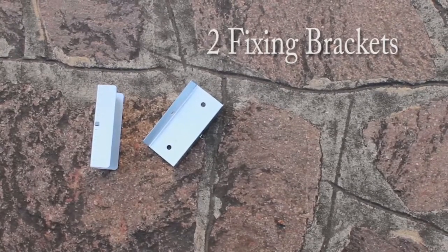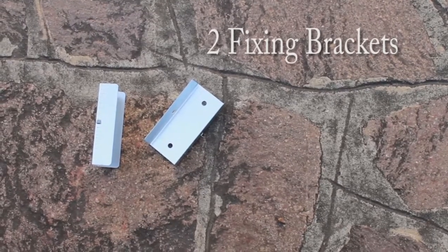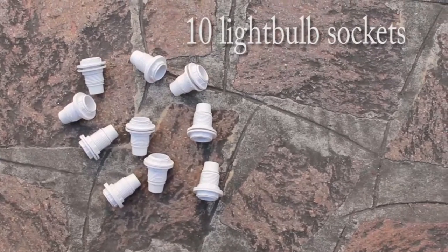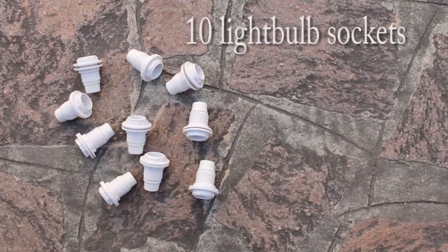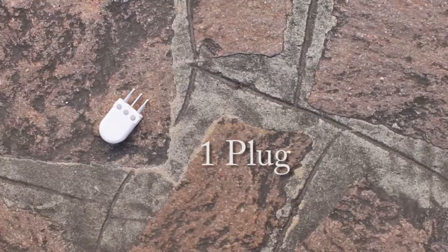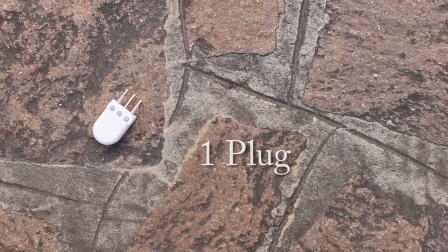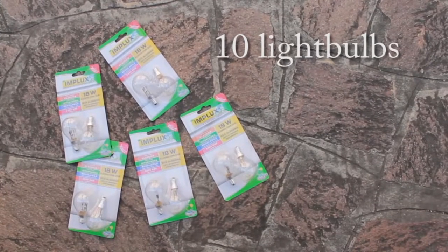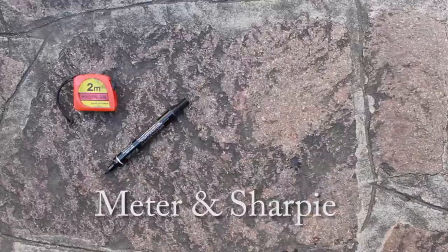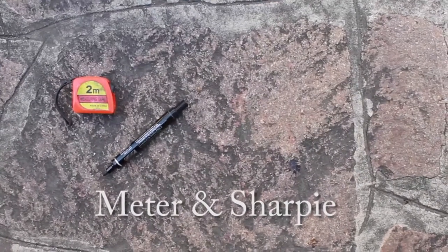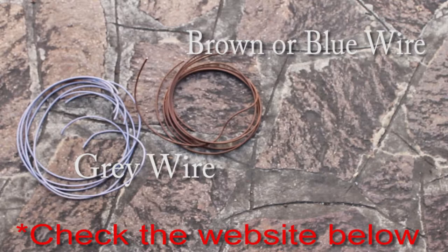Two fixing brackets. Light bulb sockets - the number is up to you, we used 10. One plug. Light bulbs. A meter and a sharpie. Brown or blue wire and grey wire, but check in the description because the colors change according to your country.